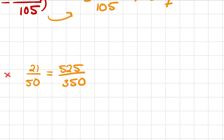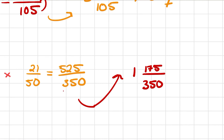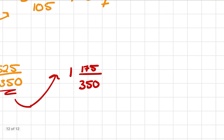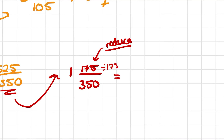Again, great answer, but I prefer it to be reduced and mixed. So I ask how many times 350 goes into 525. It goes in one whole time, with a remainder of 175 over 350. This fraction can be reduced — and fun fact, you can divide by 175 — giving you a really nice answer of 1 and 1 half.